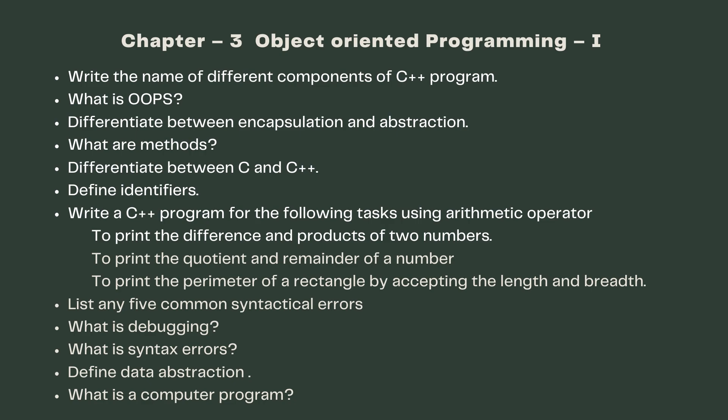Chapter Three: Object-Oriented Programming — C++. Write the names of the different components of a C++ program. What is OOP? Differentiate between encapsulation and abstraction. What are methods? Differentiate between C and C++. Define identifiers.